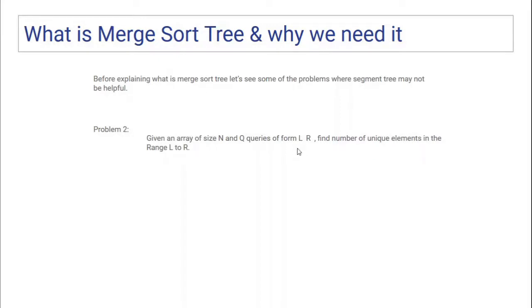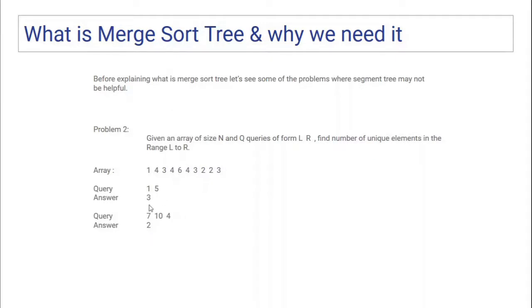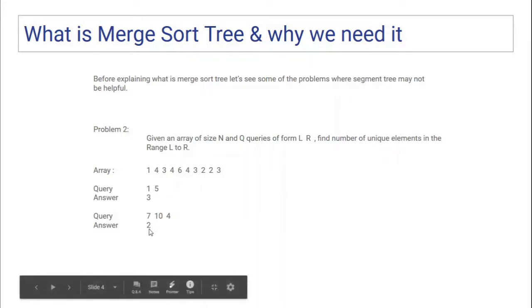Think about how you would apply segment tree to this problem. The problem is: given n numbers and q queries, each query gives a range and you must find the number of unique elements in that range. For example, in range one to five there are four unique elements — one, three, four, and six. From the last four elements there are only two unique elements — three and two — so the answer is two.